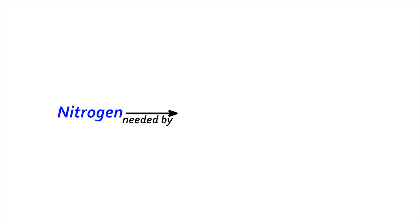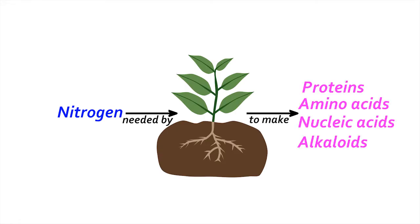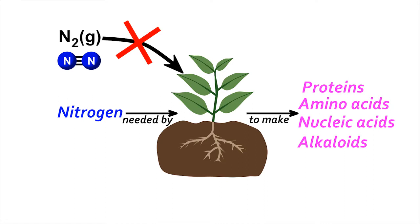Nitrogen is an important nutrient for plants, which they need to make proteins and other biologically important molecules. But plants cannot directly utilize atmospheric nitrogen, whose triply bonded diatomic molecules make it a relatively unreactive inert gas.